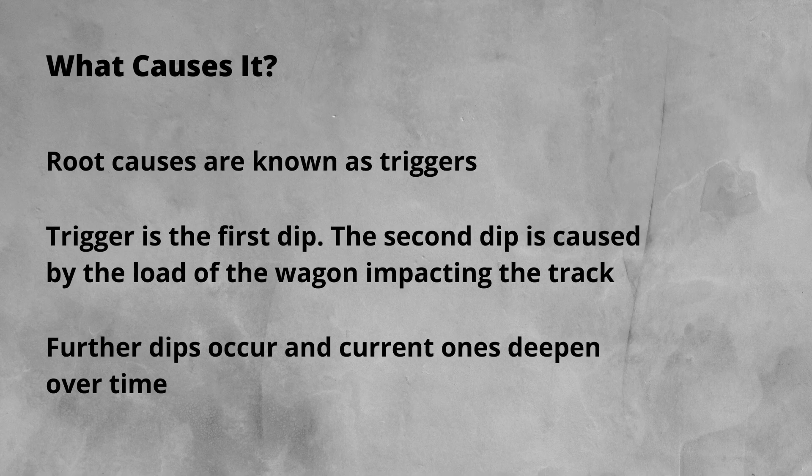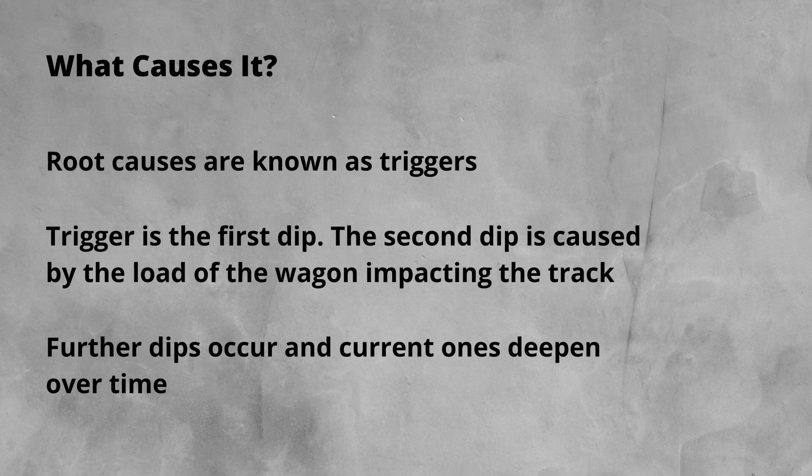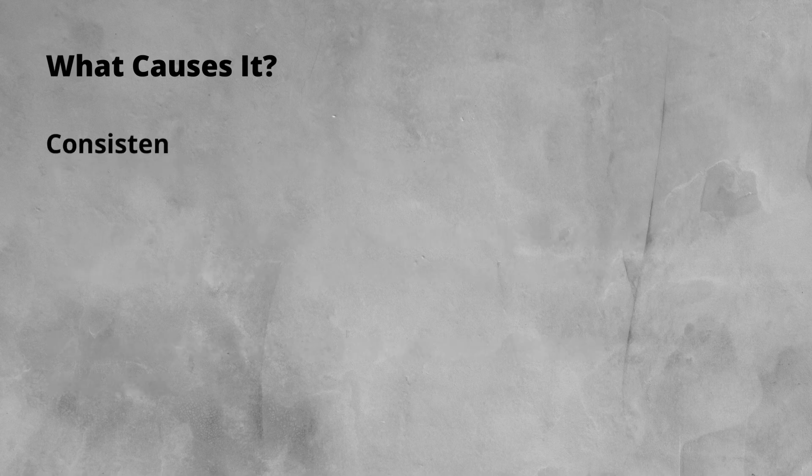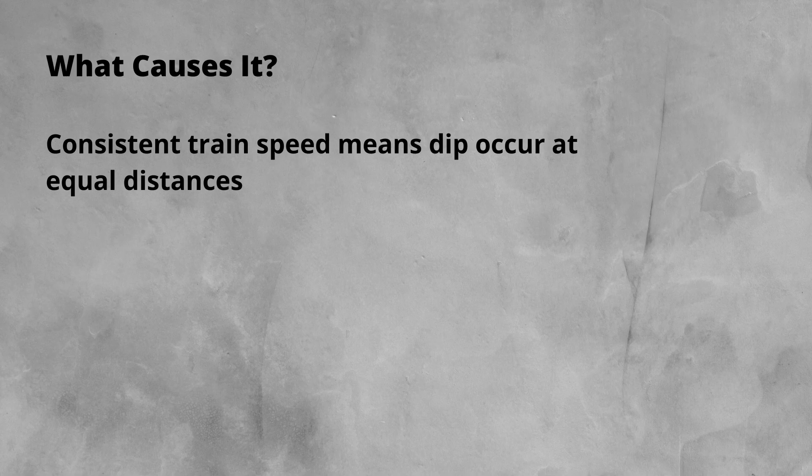This is then repeated, causing more dips and deepening the current ones. Given that it's normal for the speed of trains to be consistent through an area, the dips will occur at equal distances apart from each other.